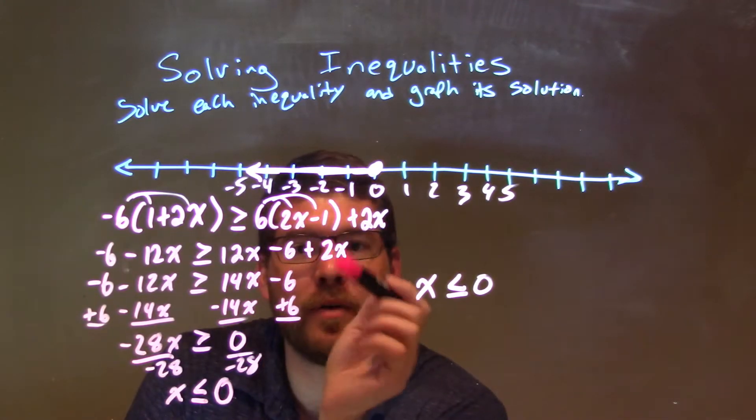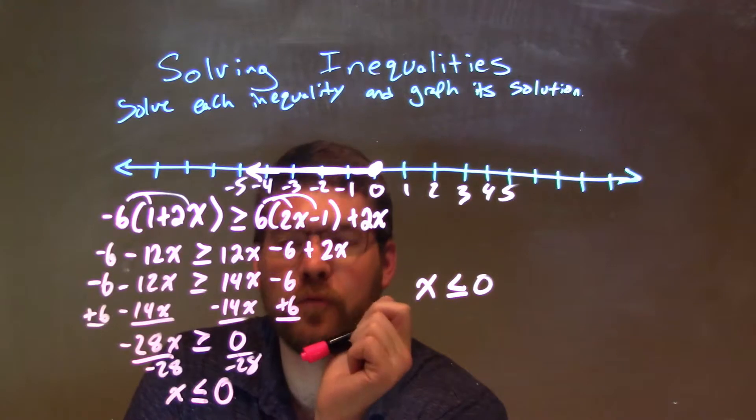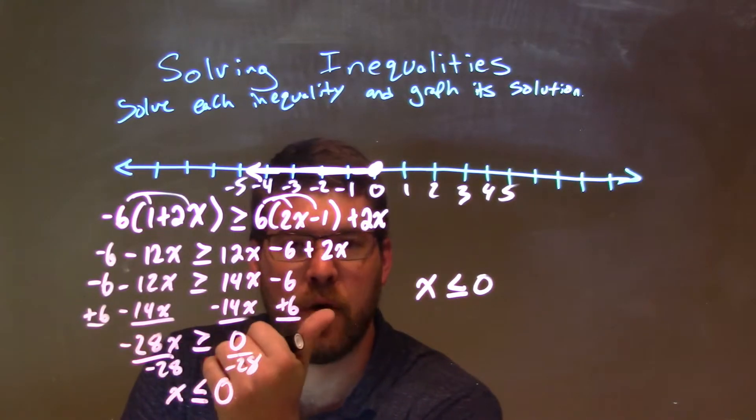We distribute the negative 6 and the positive 6 to both parts there. Then, after that, I simplify the right-hand side. From there, I got my x's together to the left, my numbers to the right.